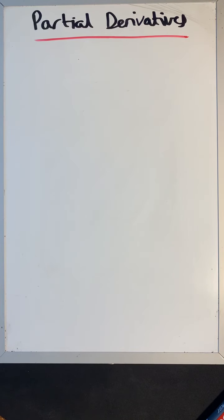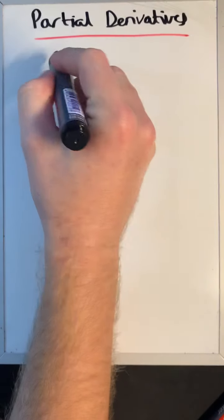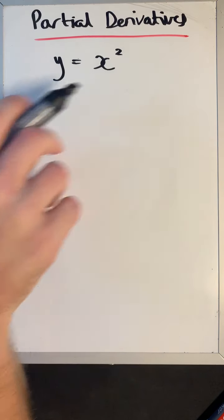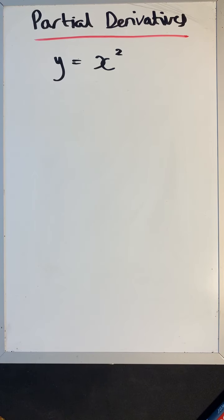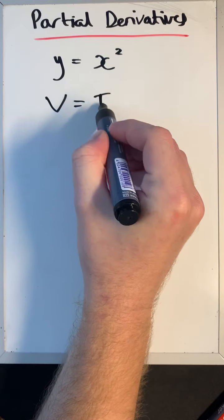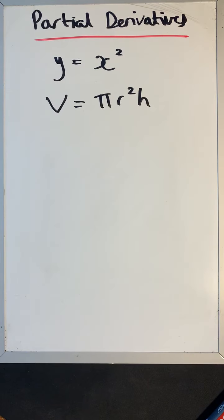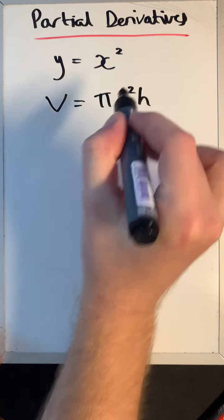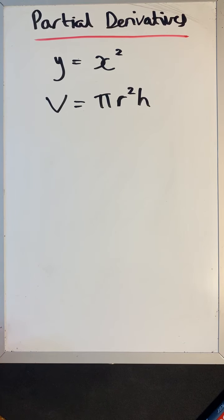In this video we're going to have a look at partial derivatives. We've seen differentiation as it normally works when we have y in terms of x, where y is equal to a function of x. But we can also have a variable — for example the volume v of a cylinder — which depends on both r and h.